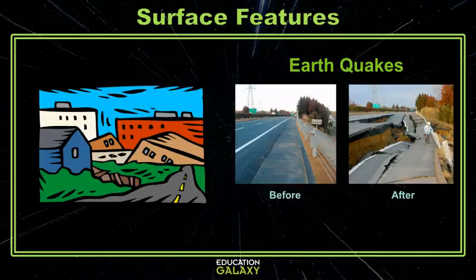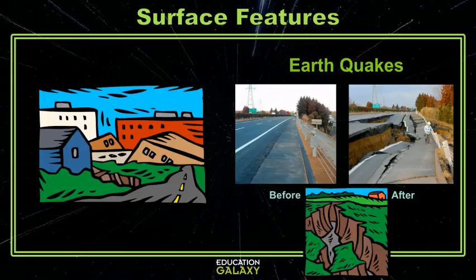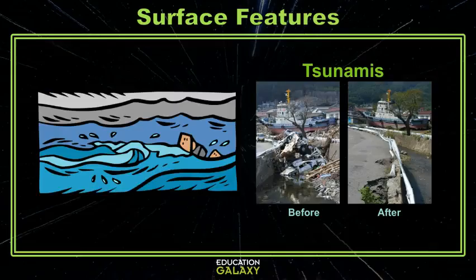Earthquakes, where tectonic plates are moving towards or away from each other causing tremors, are destructive changes — they often end up tearing apart the Earth's surface. When earthquakes happen on one side of the world, tsunamis happen on the opposite side. Tsunamis are large waves that come and crash against the shore and scrape everything off back into the ocean. These are a very powerful destructive force.